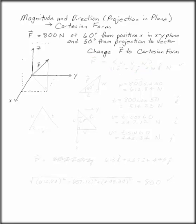Using the magnitude and the direction including the projection in the xy plane, change F into Cartesian form. F is 800 newtons at 60 degrees from the positive x in the plane and 50 degrees above the plane up to the vector. Change F into Cartesian form.